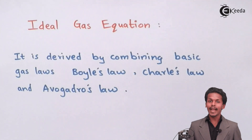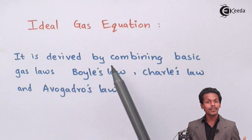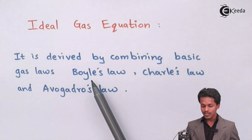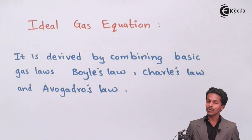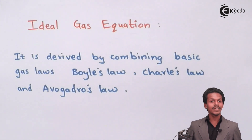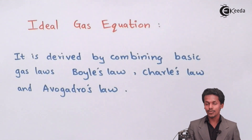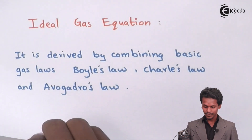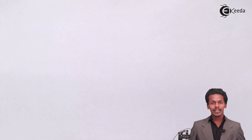The Ideal Gas Law is derived by combining the basic gas laws — Boyle's Law, Charles' Law, and Avogadro's Law. By combining all these laws, we can easily derive the Ideal Gas Equation. Let us start with the first one, that is Boyle's Law.